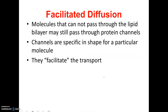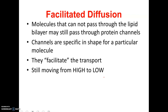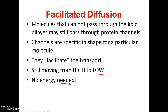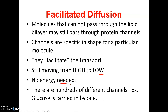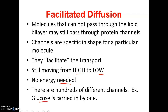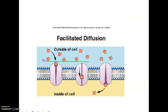Facilitated diffusion: sometimes things cannot get into the cell but your cell still needs them. This is still moving things from high to low concentration and does not require energy. But unlike regular diffusion, molecules are going through specific proteins in the cell membrane — this is still passive transport, no energy needed. A good example is glucose, which goes into your cells by facilitated diffusion. To facilitate means to help — proteins in the membrane help carry things through because these are solutes that cannot pass through the phospholipid part.